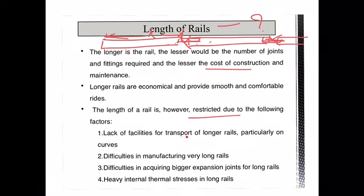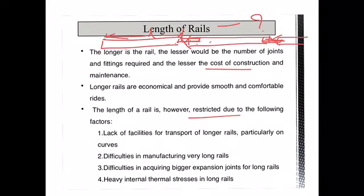However, it is not possible to manufacture any arbitrary rail length. The length of the rail is restricted because of certain factors. During construction, if the length of the rails is too high, transporting such longer rails — especially on curves — is very difficult. Handling longer rails is also difficult because rails have heavy weight. There is also difficulty in manufacturing long rails. Furthermore, when the length of the rails increases, the expansion gaps provided also need to be increased, and acquiring bigger expansion joints with long rails is difficult. Also, when you use longer rails, heavy internal thermal stresses are developed along the long rail section.